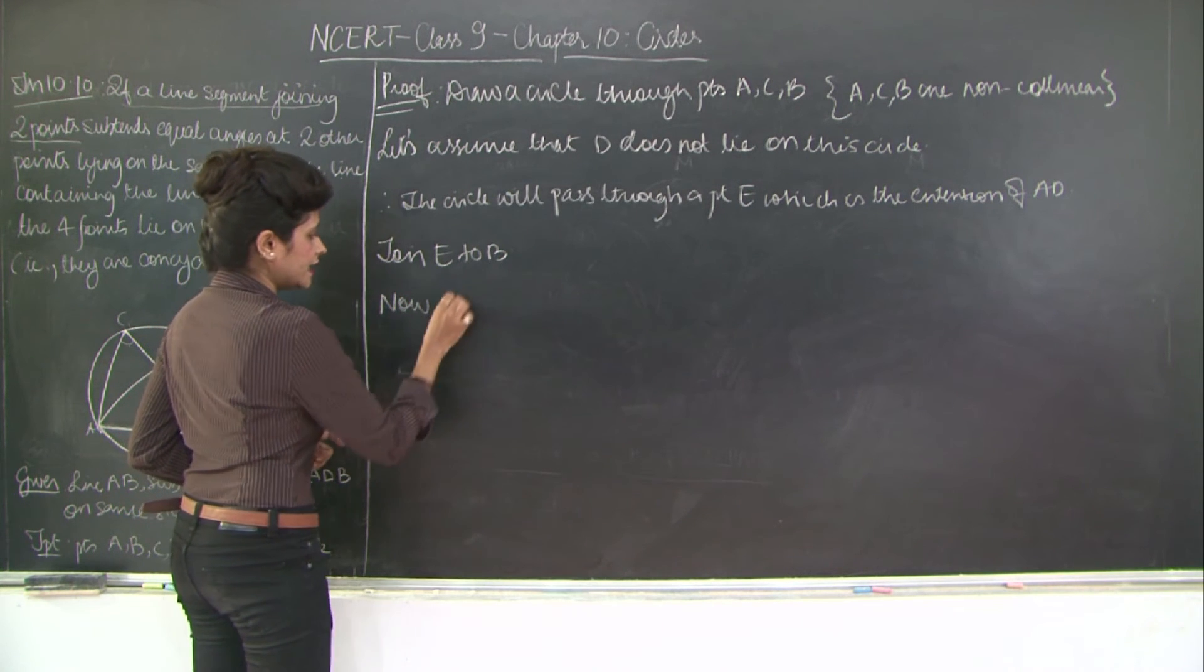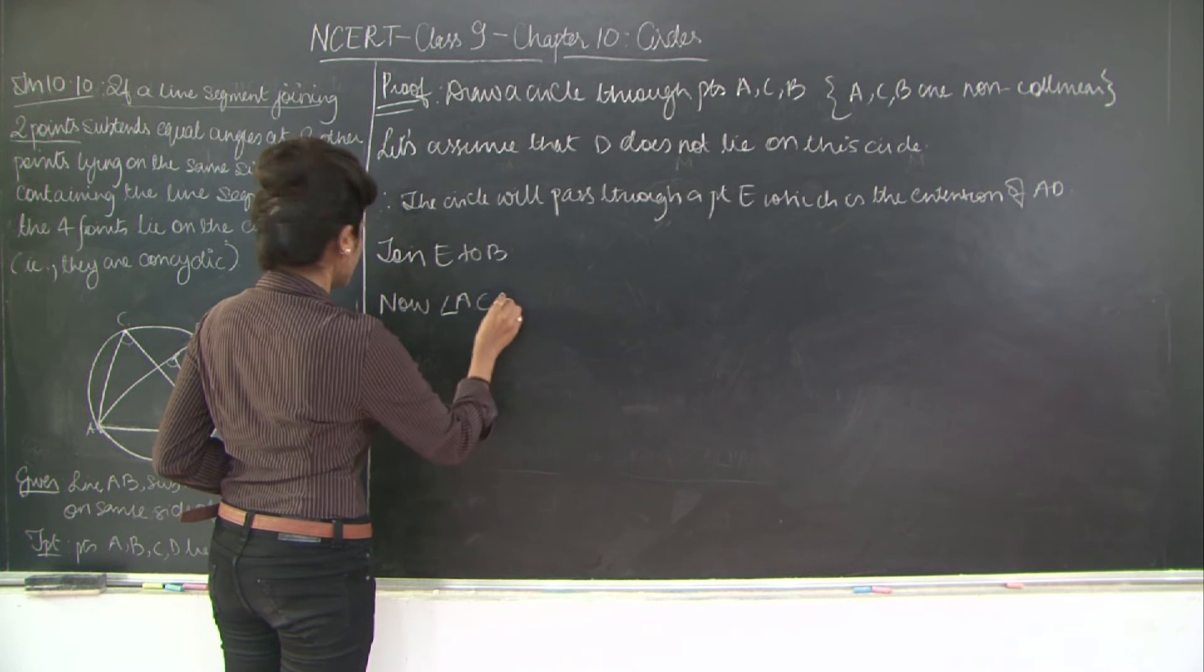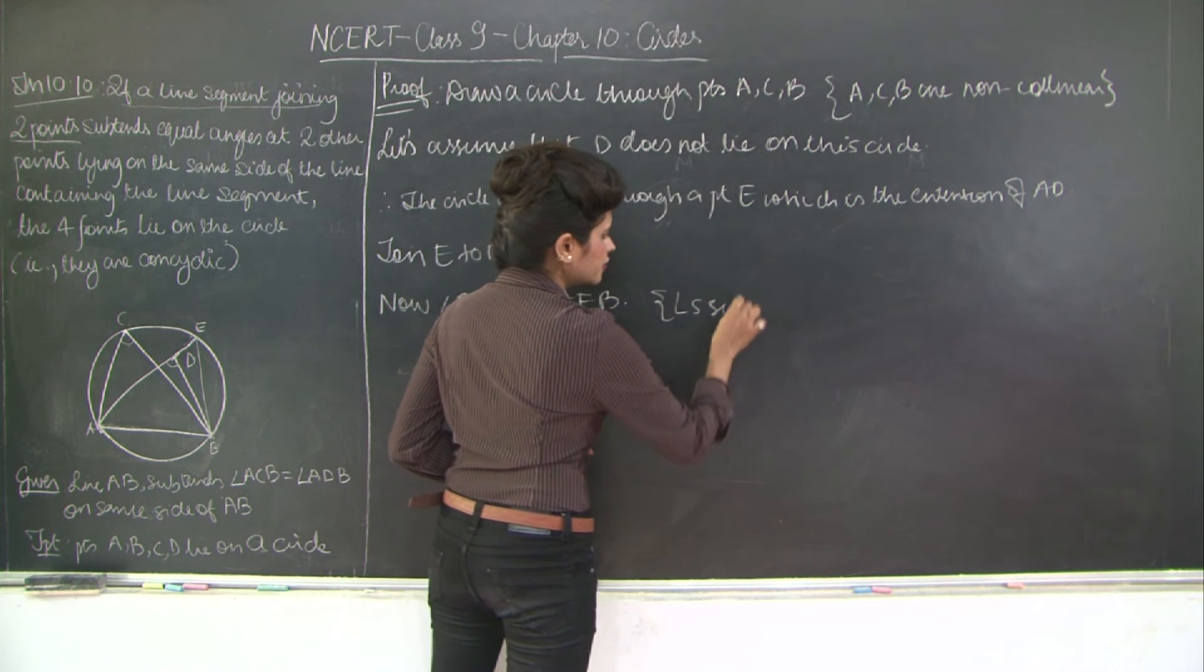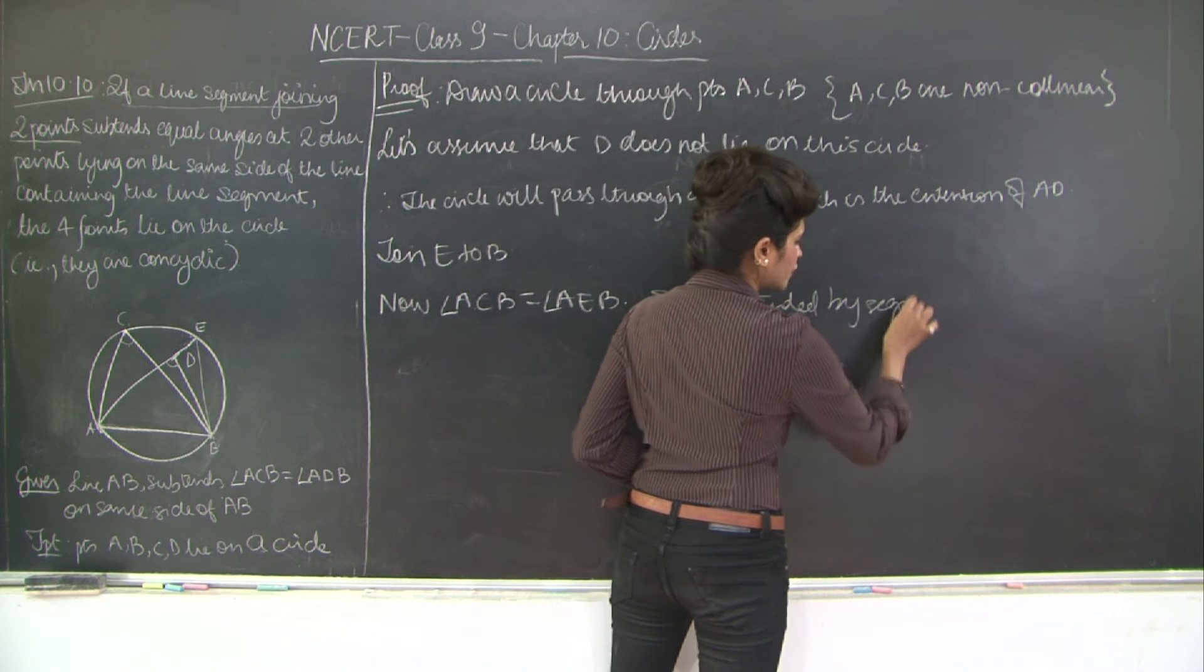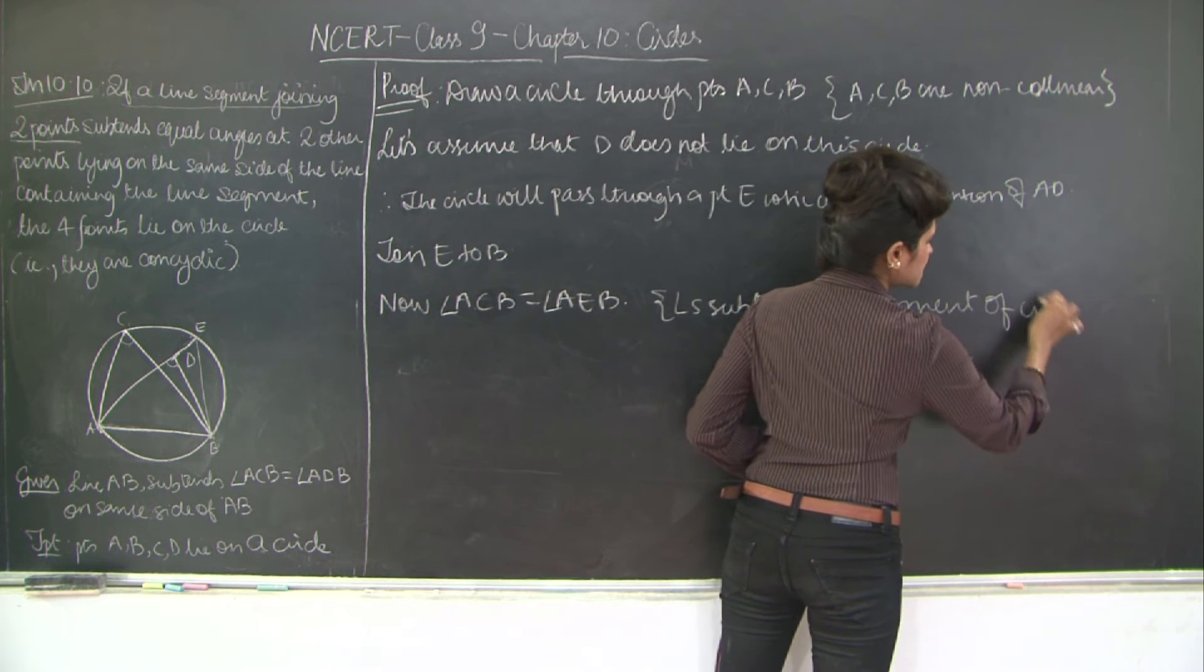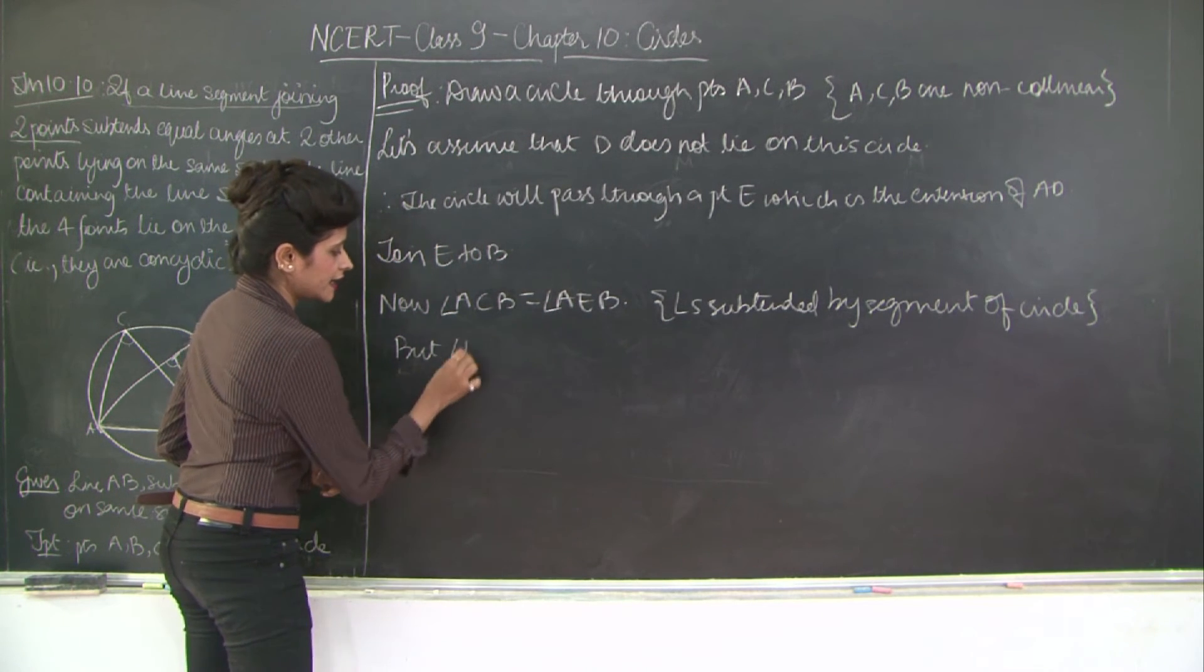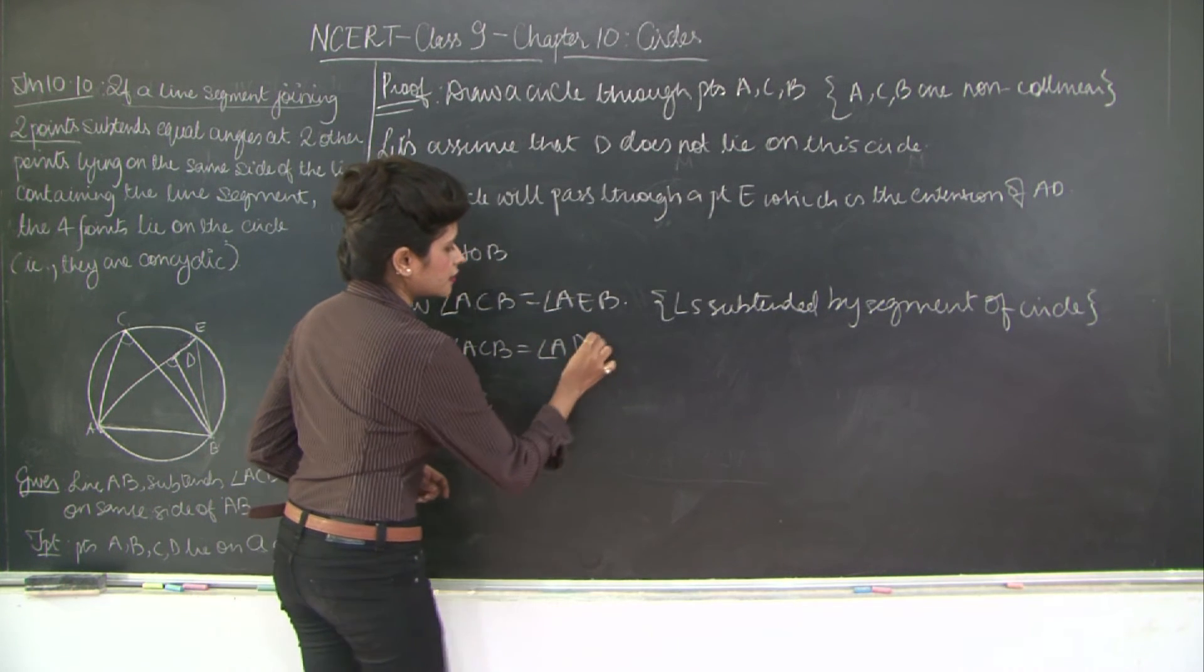Now, angle ACB is equal to angle AEB. Why? Because they are the angles subtended by same segment of the circle. We know that angles subtended by the same segment of the circle are equal. This is what we learnt in theorem 10.9. But, angle ACB is equal to angle ADB. This is given.